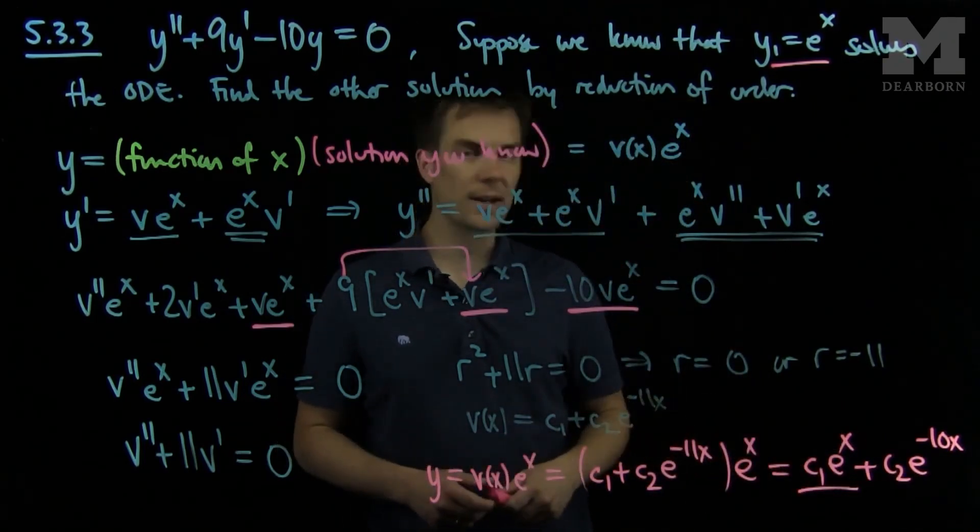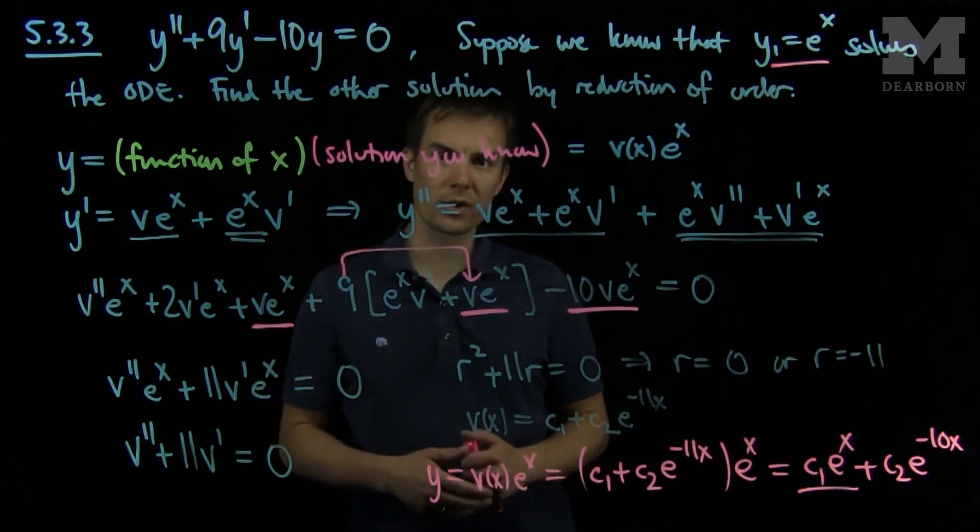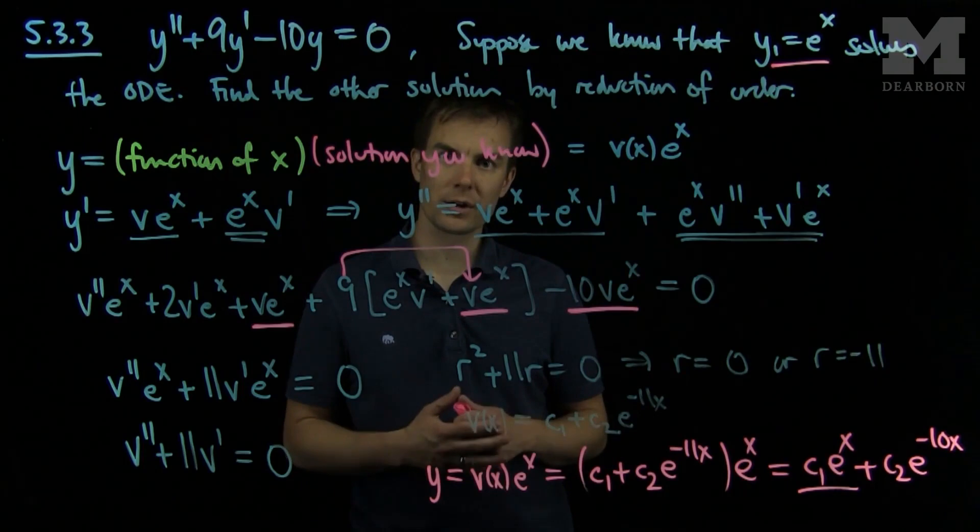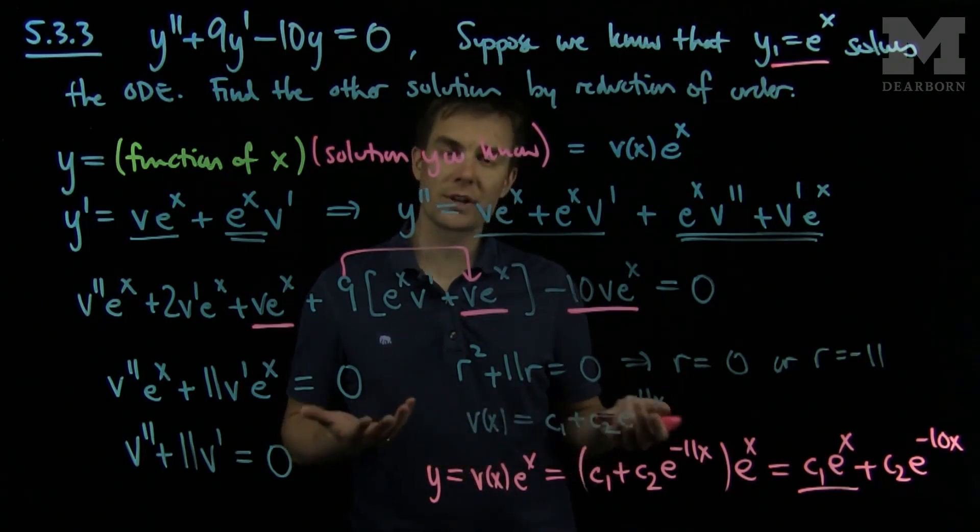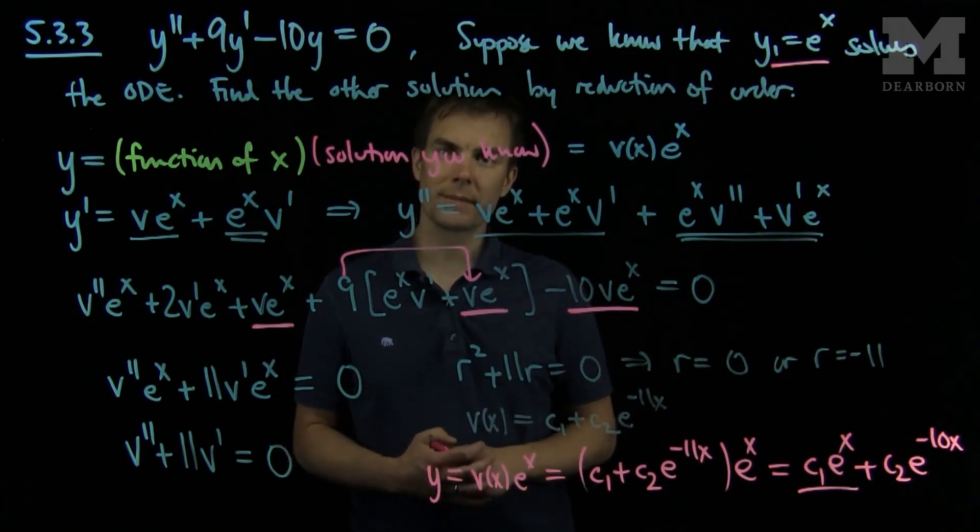We have two constants c1 and c2 to a second order equation, and this demonstrates how reduction of order will give us the general solution to the homogeneous problem or non-homogeneous problem if we just have one particular solution. Thank you very much.